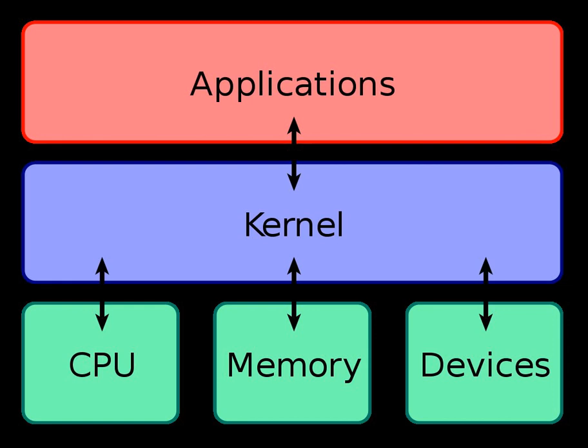In a monolithic kernel, all OS services run along with the main kernel thread, thus also residing in the same memory area. This approach provides rich and powerful hardware access. Some developers, such as Unix developer Ken Thompson, maintain that it is easier to implement a monolithic kernel than microkernels. The main disadvantages of monolithic kernels are the dependencies between system components — a bug in a device driver might crash the entire system — and the fact that large kernels can become very difficult to maintain.